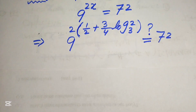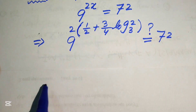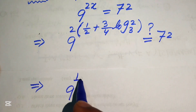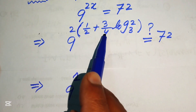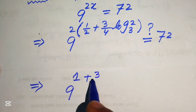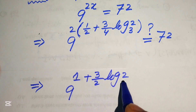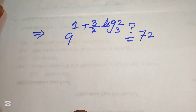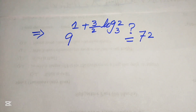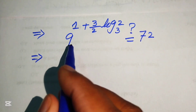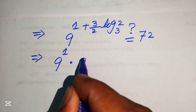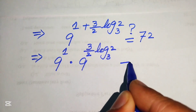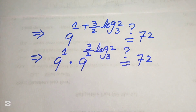We multiply the 2 into the exponent. The 2 and 2 in the denominator of 1/2 cancel to give 1, and 2 times 3/4 gives 3/2. So the exponent becomes 1 + (3/2)·log₃2. We break this as 9^1 · 9^((3/2)·log₃2) and check whether this equals 72.